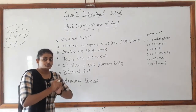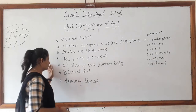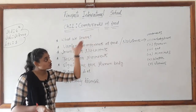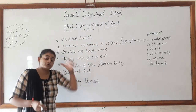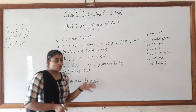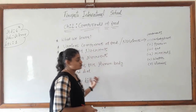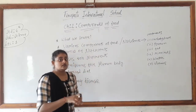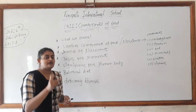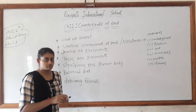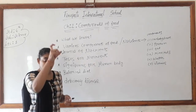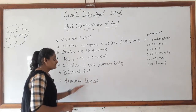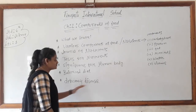We will also learn about balanced diet. Balanced diet means all the nutrients are required by the body in a proper proportion or proper measurement. All the components are present and each has a certain amount required by our body — that is known as the balanced diet.